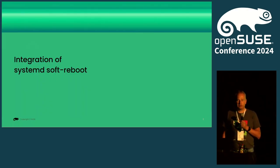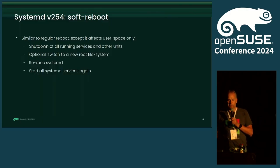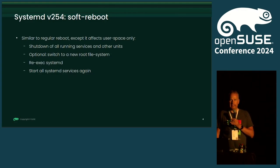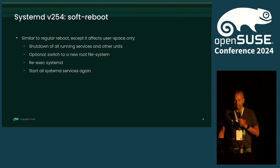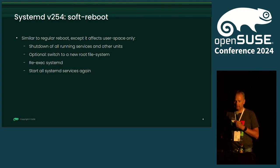Today's topic is soft reboot, which got integrated in systemd with version 254. At first it seemed like a nice new feature — who can use it, does it make any difference, does it have any advantages? We integrated it in our distribution and this is the feedback from what we learned.